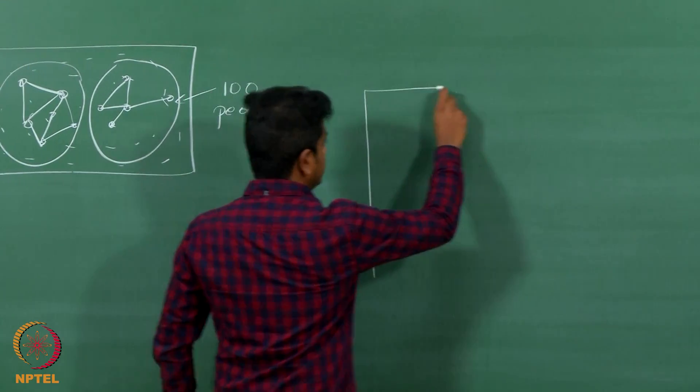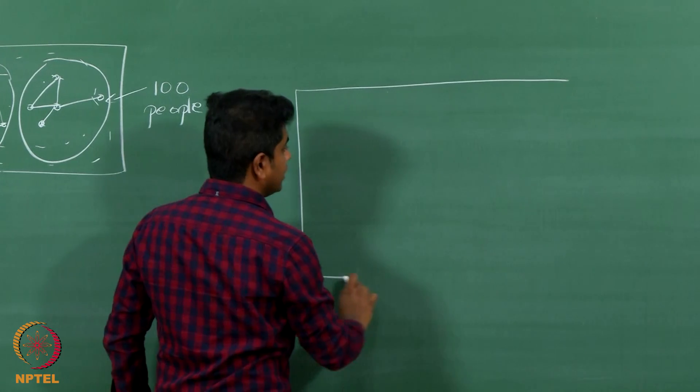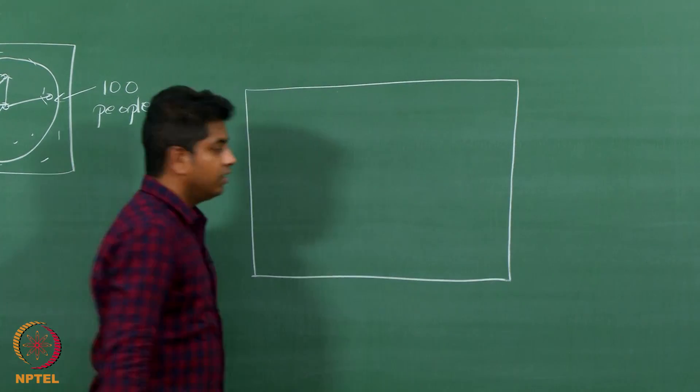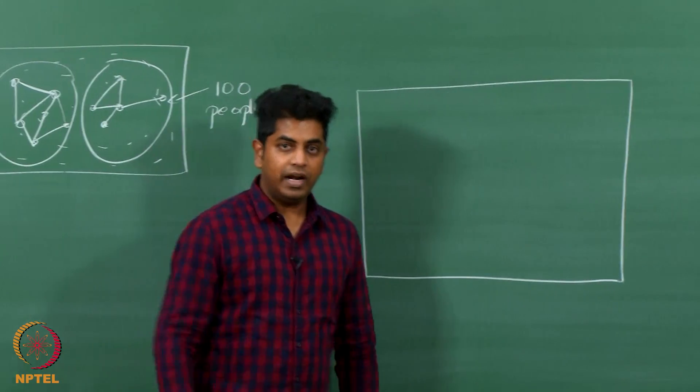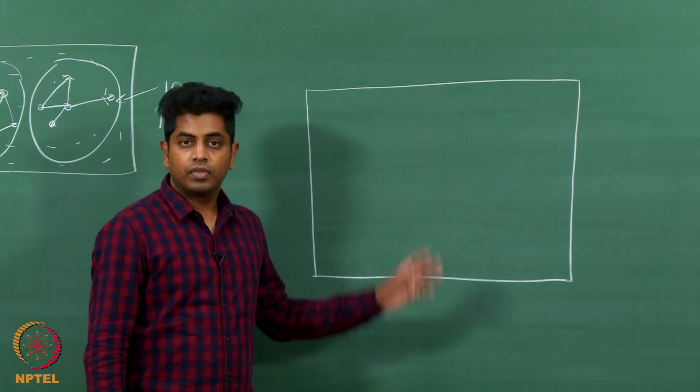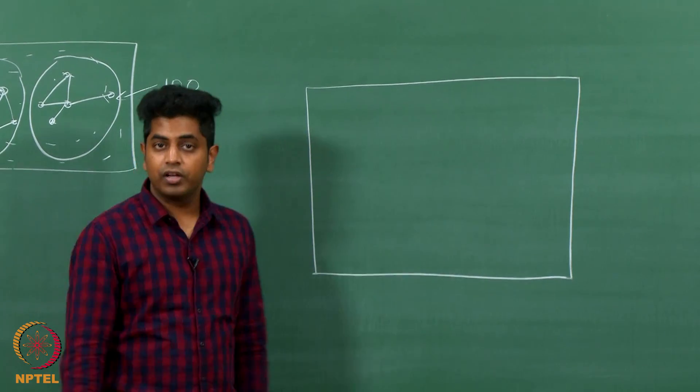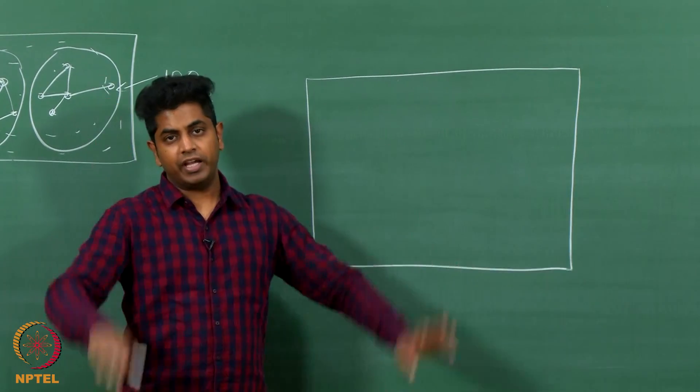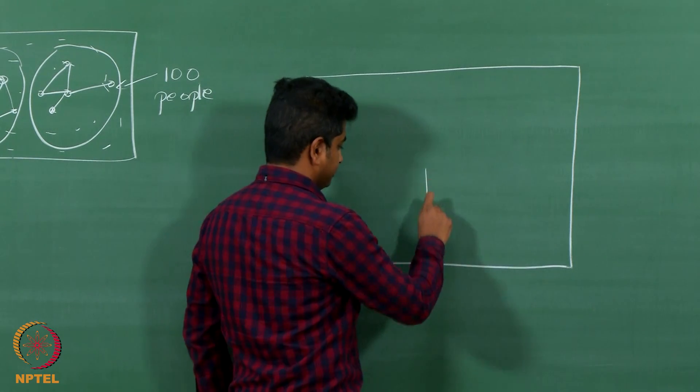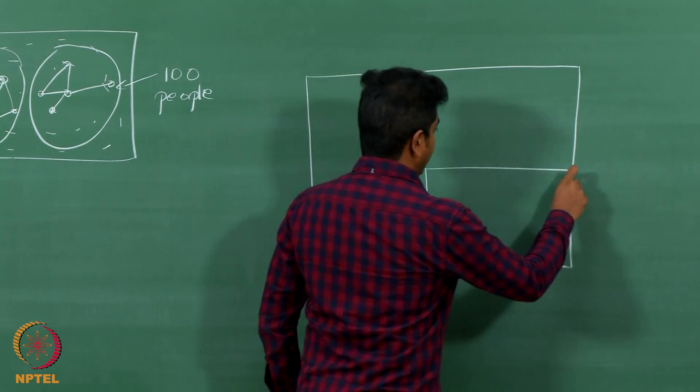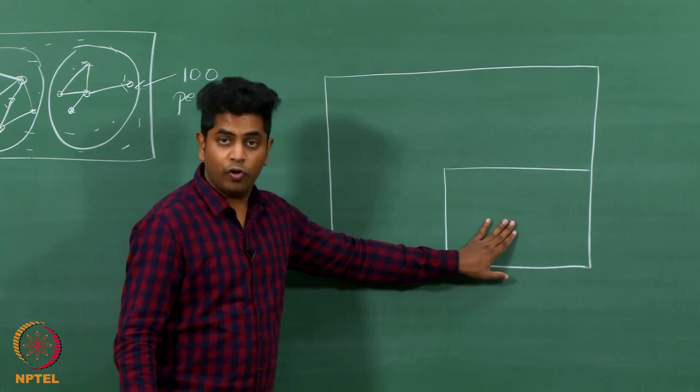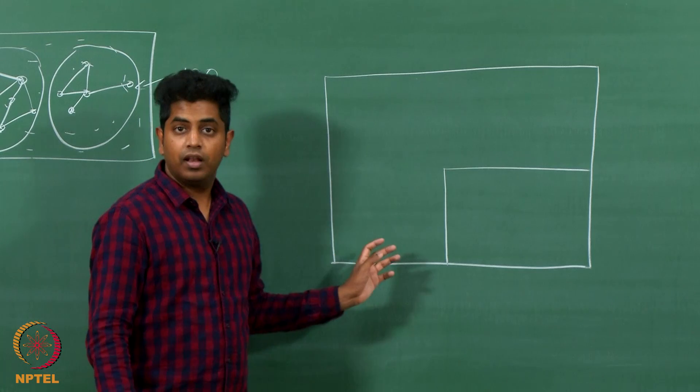Let me give you an intuition by looking at a similar example. Look at this. Assume I am giving you a shooting target. By a shooting target I mean I will give you a gun and ask you to shoot within this rectangle only. You can go on shooting as many bullets as you want.